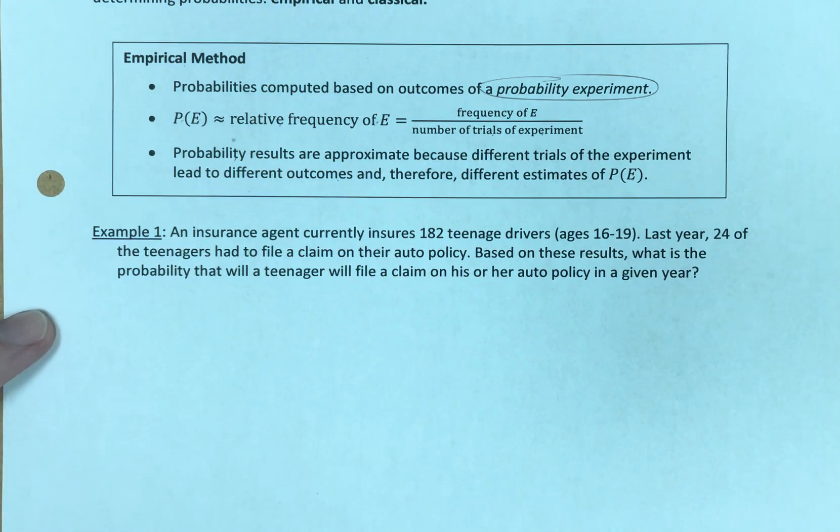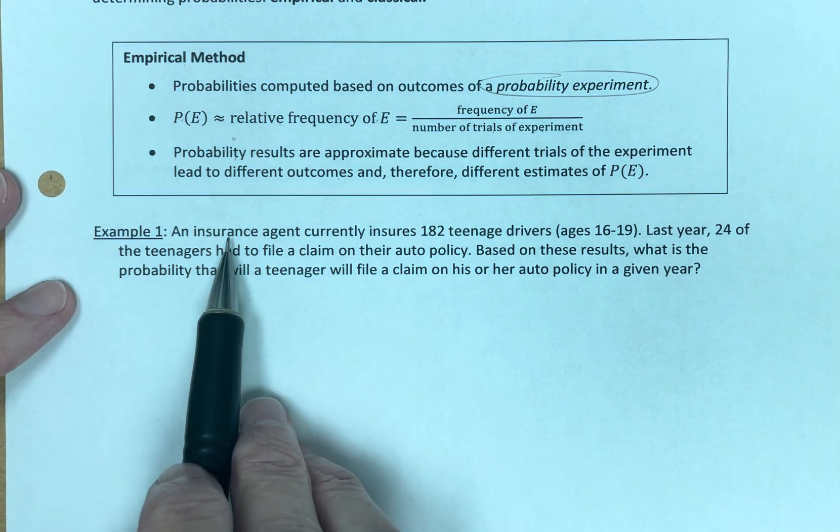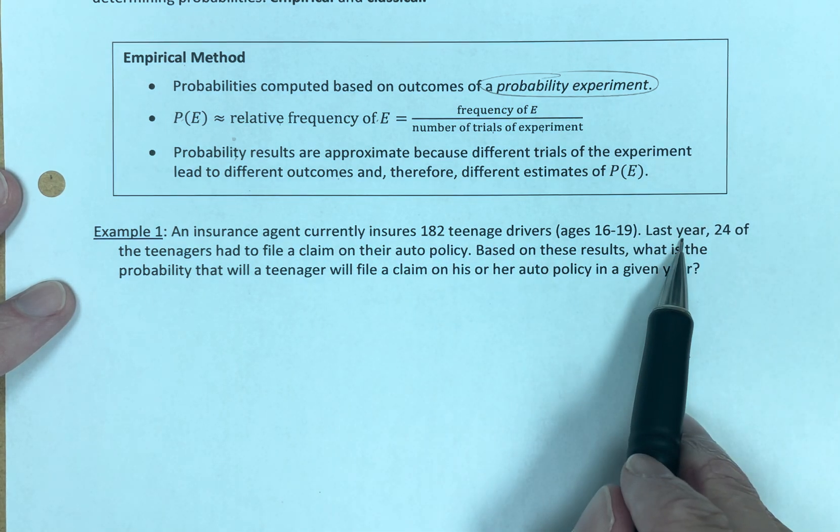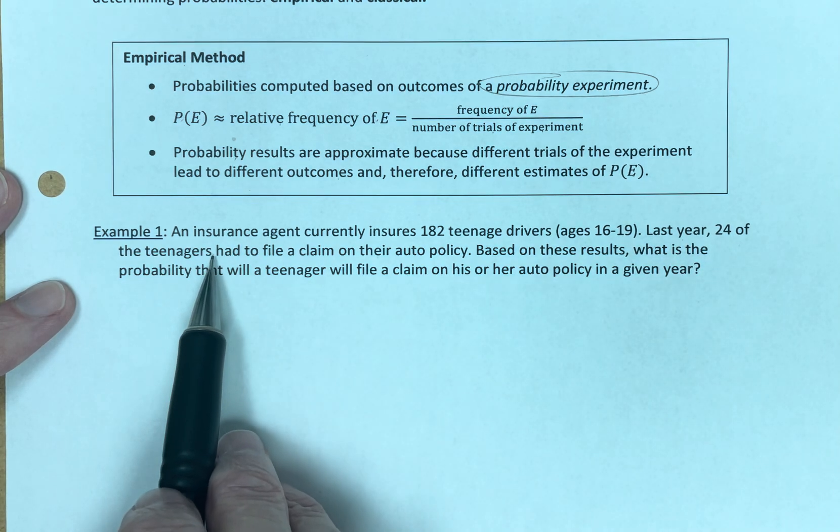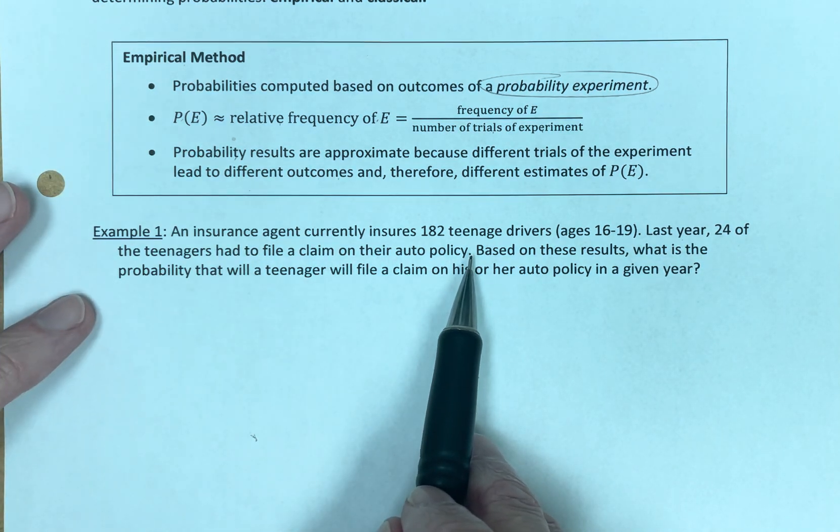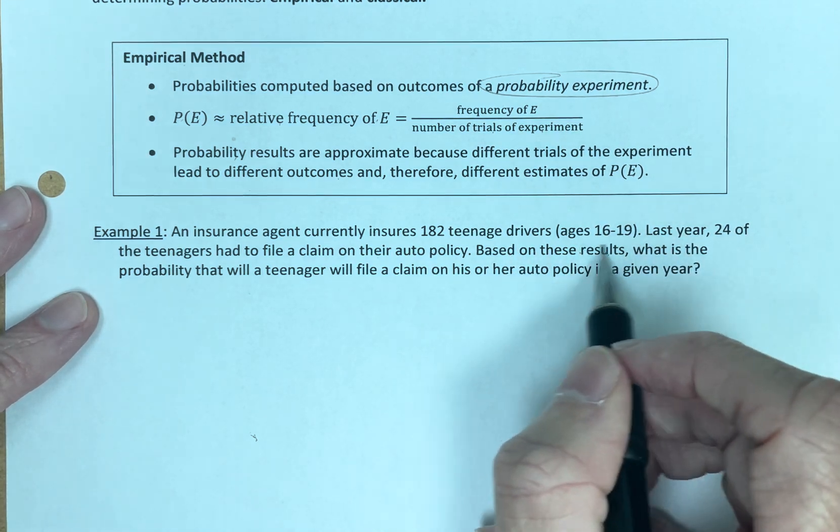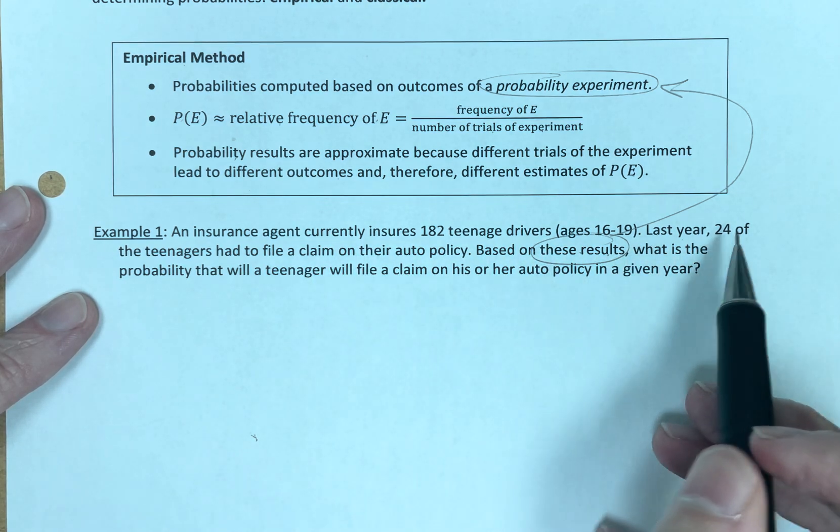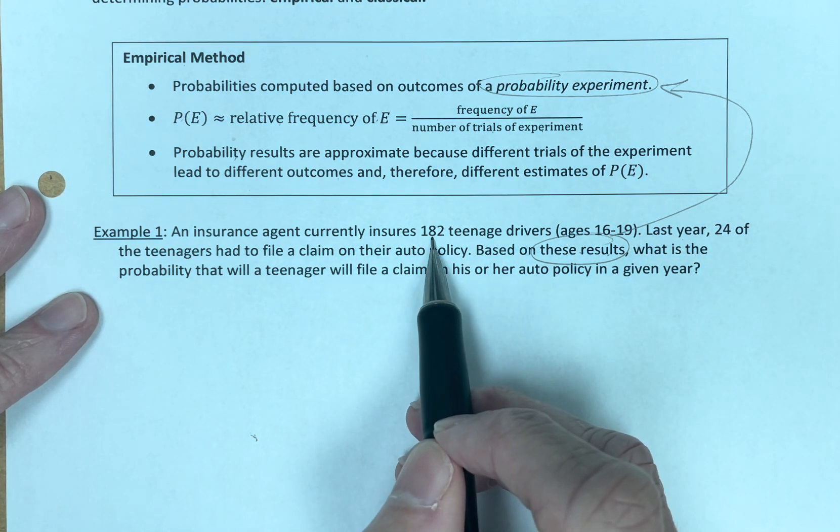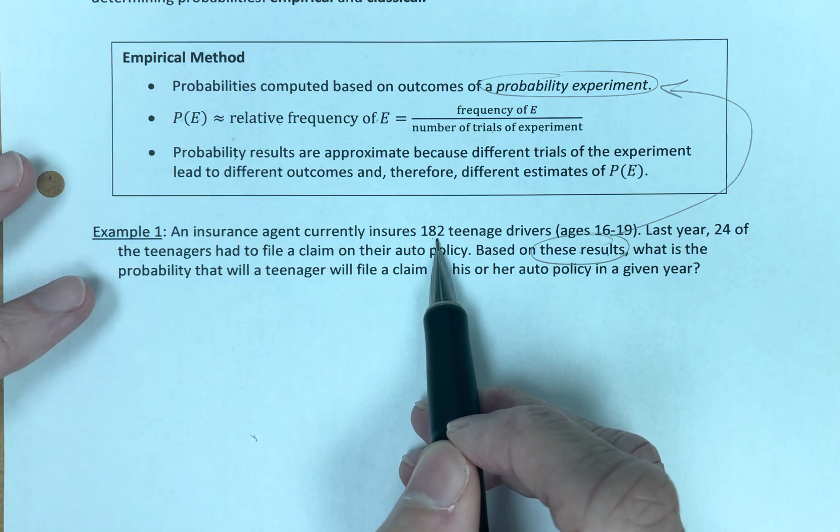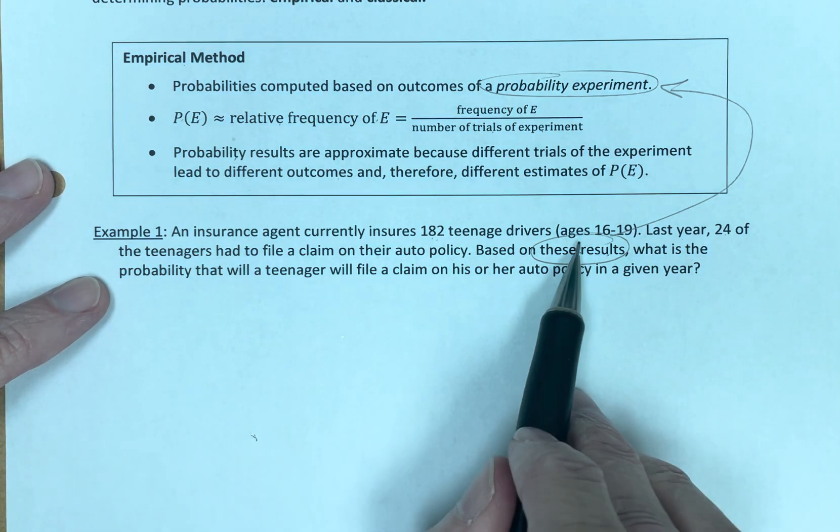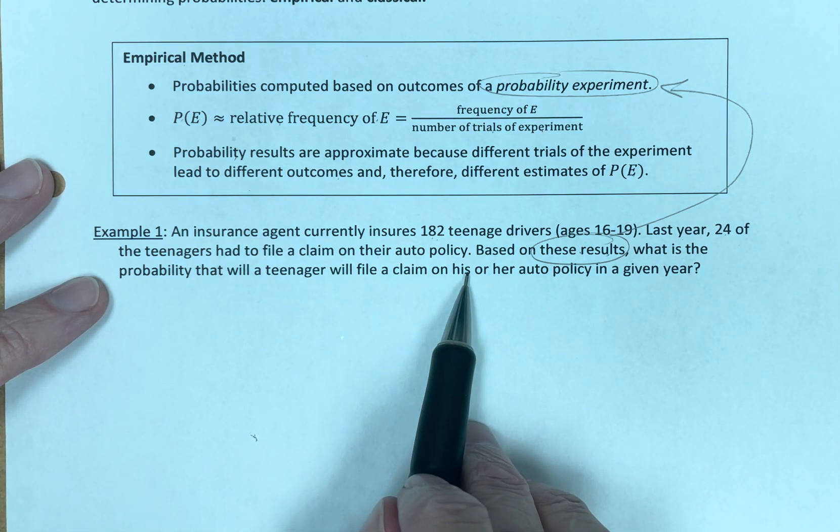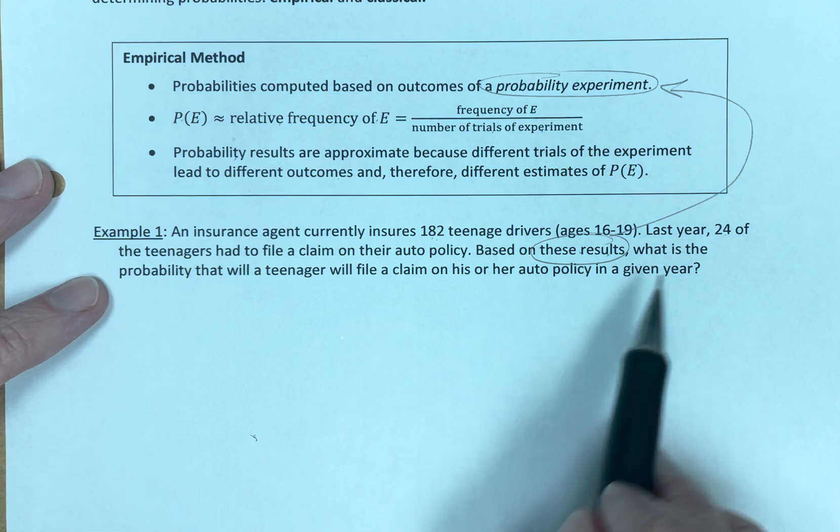Let's take a look at an example here, how this comes into play. An insurance agent currently insures 182 teenage drivers. Last year, 24 of the teenagers had to file a claim on their auto policy. Based on these results - this is what we've done, we're using the results from an experiment. We took 182 drivers, our experiment was on 182 and 24 had to file a claim. Based on these results, what is the probability that a teenager will file a claim on his or her auto policy in a given year?